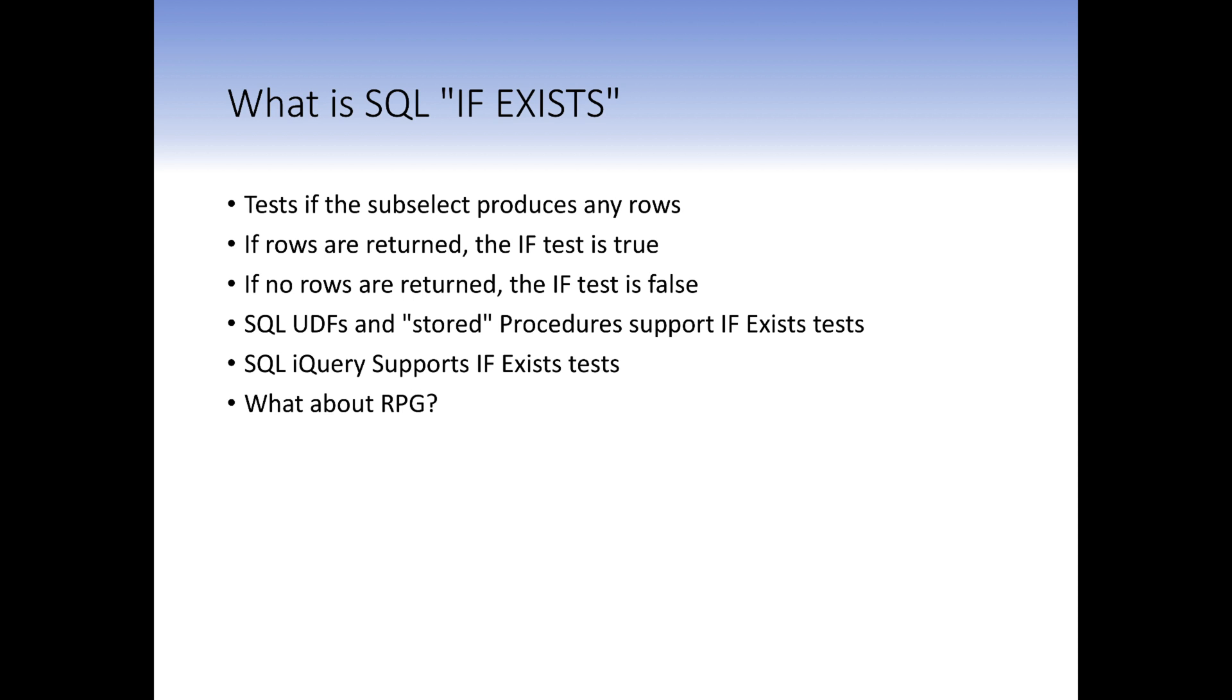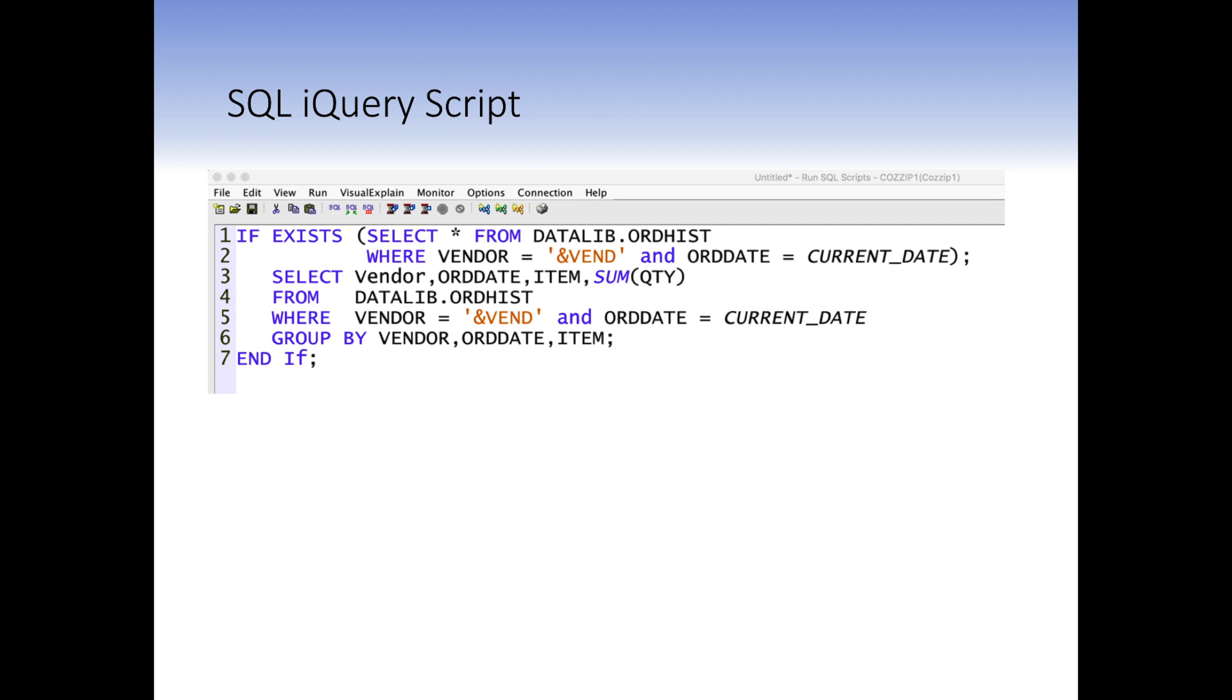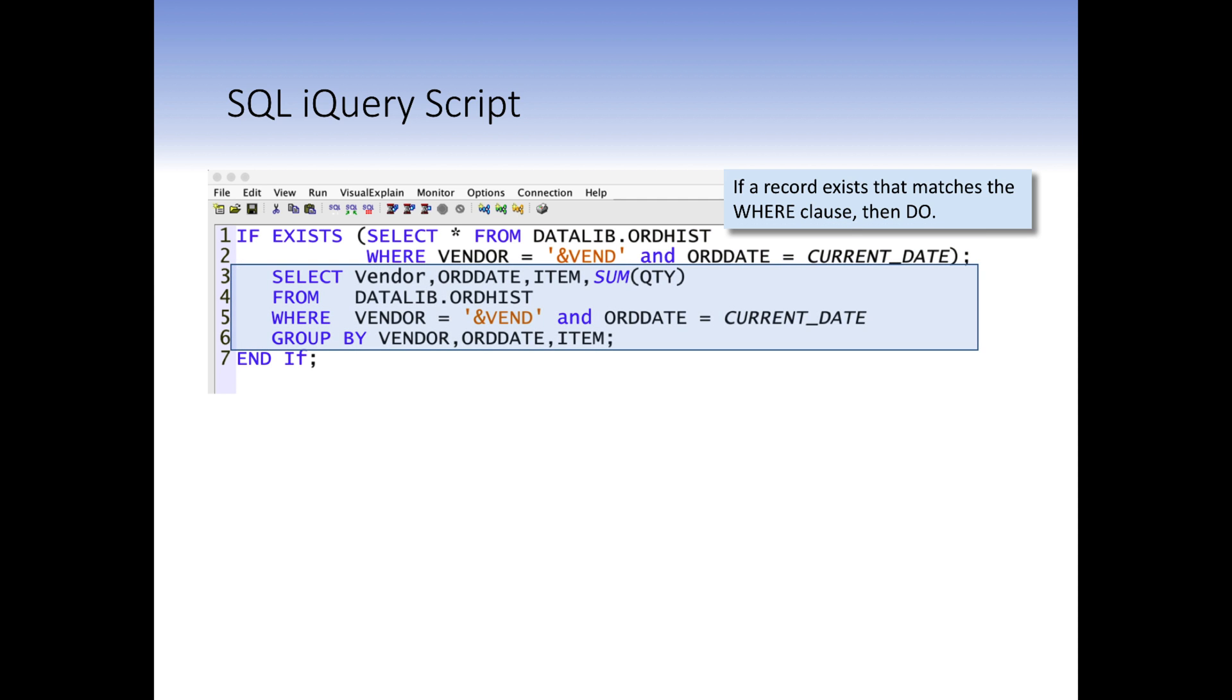But what about good old RPG? What can you do with that? Well, first let's look at an example of an if exists statement. Here we have an SQL iQuery script that includes an if exists statement. If a record exists that matches the where clause of the sub-query, then the statements between the if and the end if statement are performed. In this case, it's another select statement. This runs great in SQL iQuery and also in user-defined functions with some modifications.